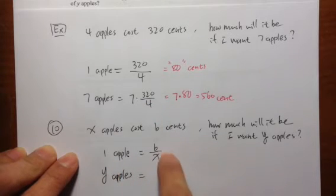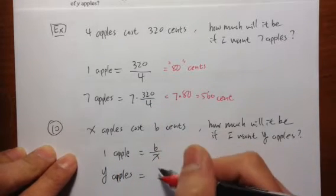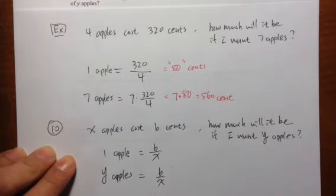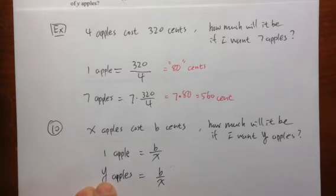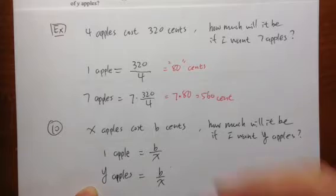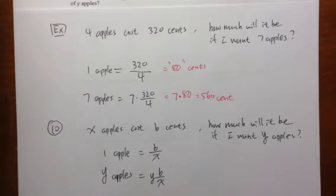So one apple is B over X. Let me write that down first. I just need to multiply by Y. That will give us the total cost. So put a Y right next to it. That indicates that they are multiplying. And that's pretty much it.